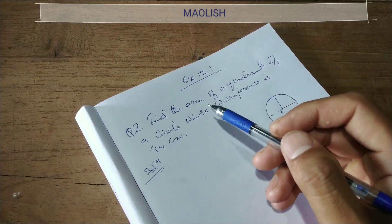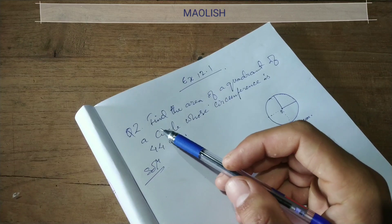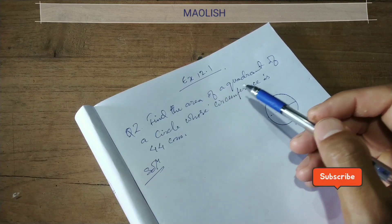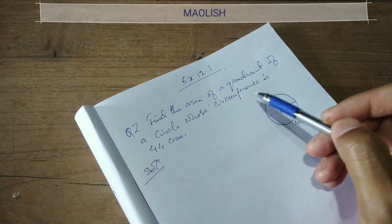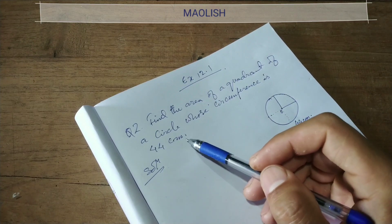Question number two, exercise 12.1. Find the area of a quadrant of a circle whose circumference is 44 cm.